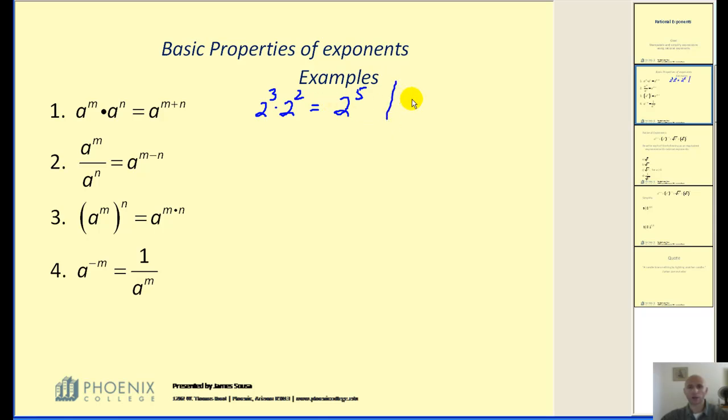Here's an explanation of why. Two to the third, of course, is two times two times two. Multiply it by two to the second, and we can see very easily there are five factors of two.